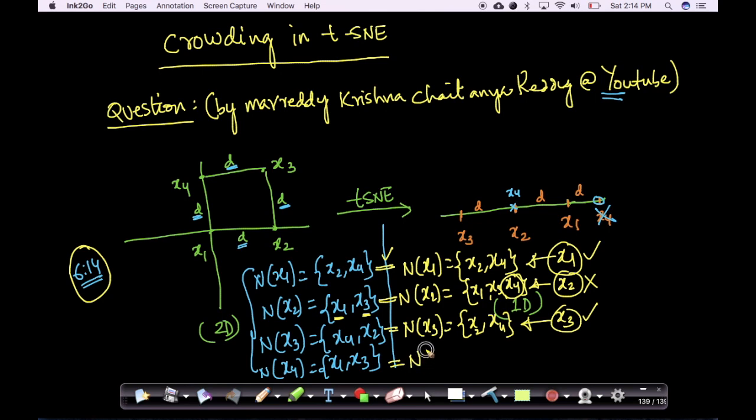What about x4? What is my x4's neighborhood? My x4 has x1, x3 and x1, x2 and x3. All three of them in the neighborhood because x2 and x4 are overlapping.